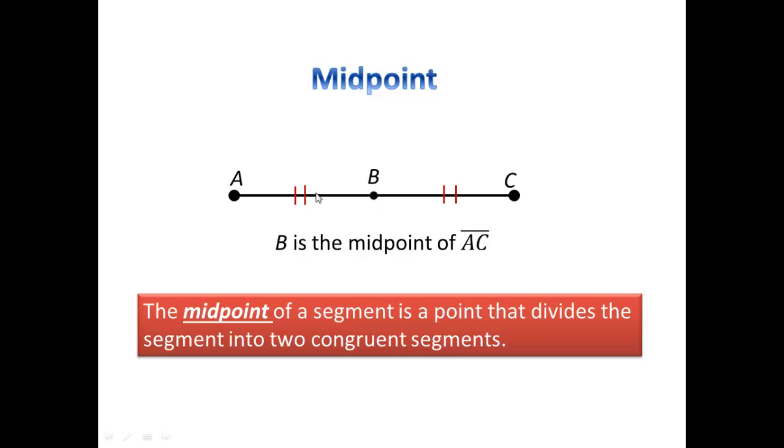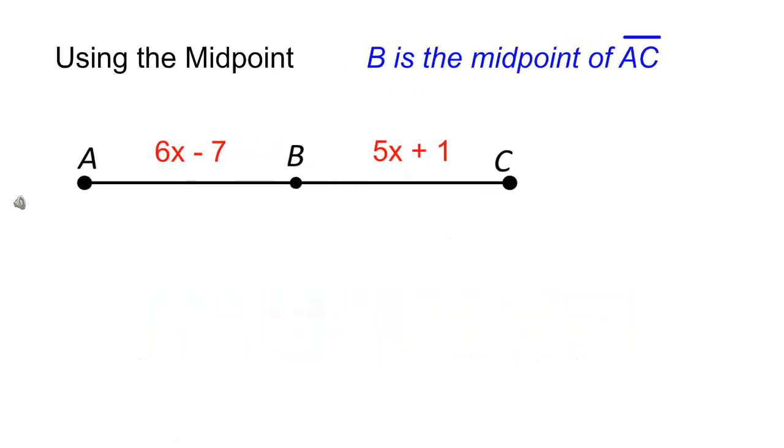We know this is the midpoint because AB is congruent to BC, and we know that because they have the same number of marks. It doesn't matter how many marks they have, as long as it's the same number—that tells us those segments are congruent.